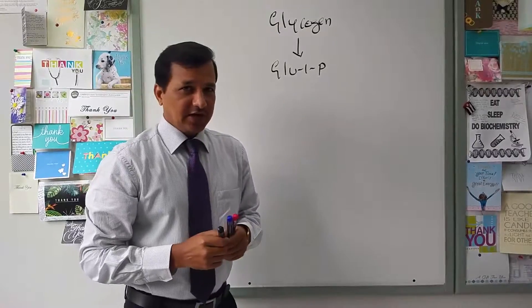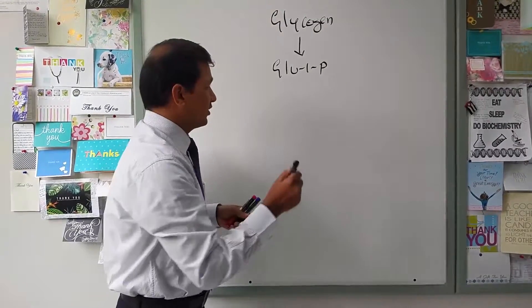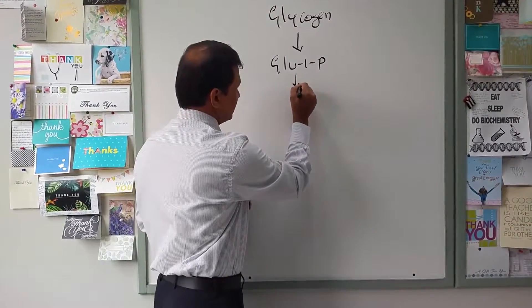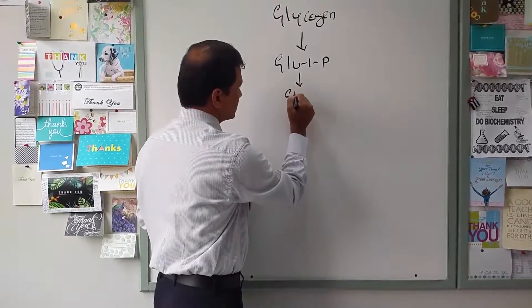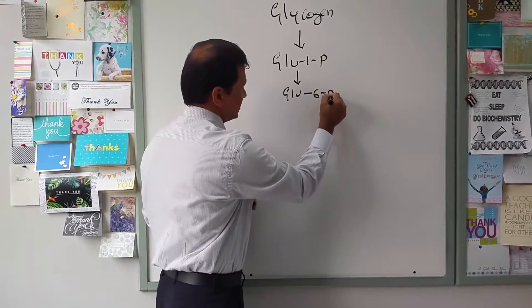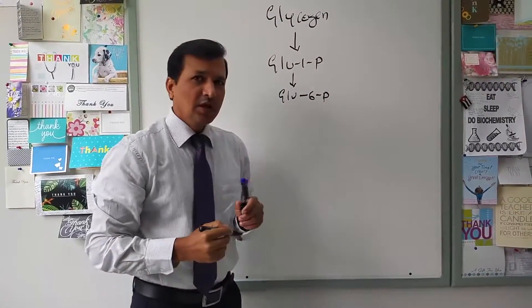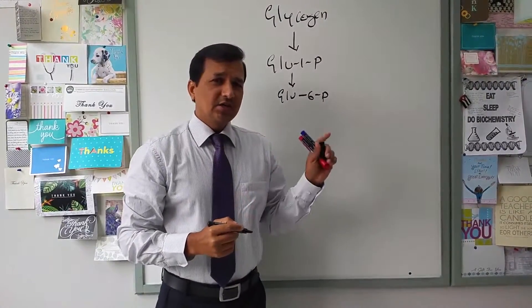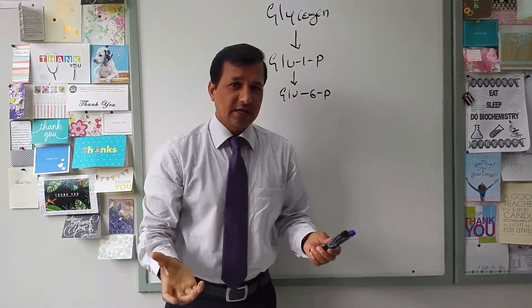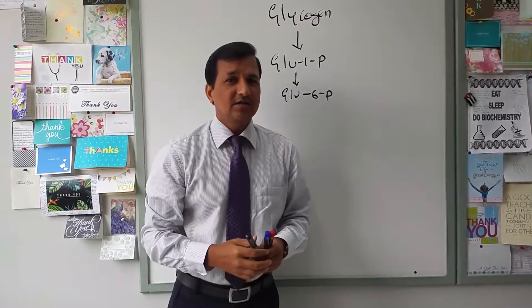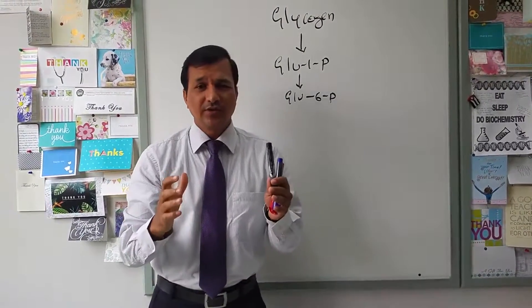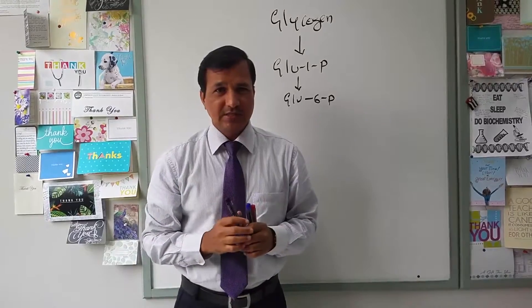Glucose-1-phosphate is converted into glucose-6-phosphate. This glucose-6-phosphate in peripheral tissues like skeletal muscle has to undergo glycolysis to generate ATPs.